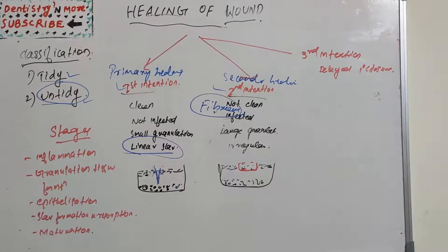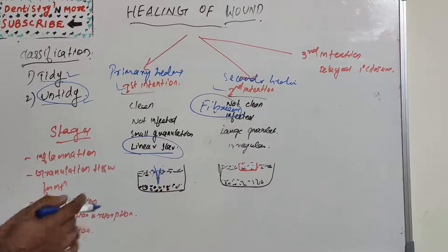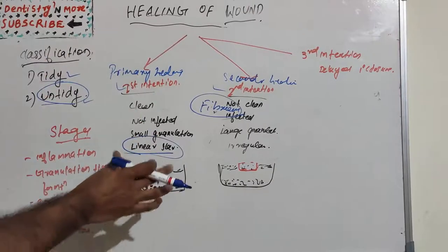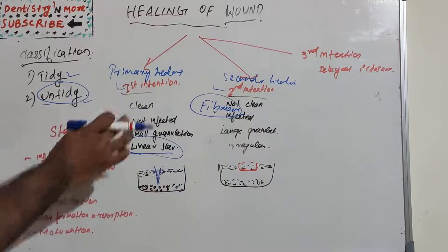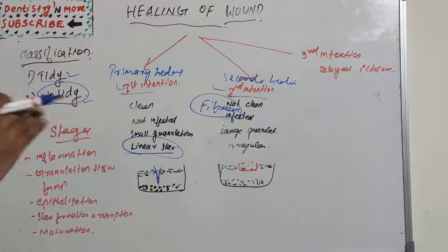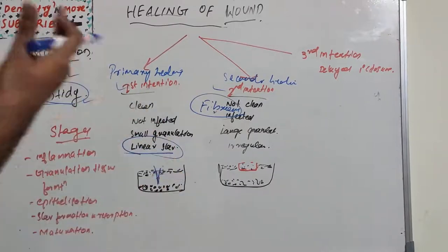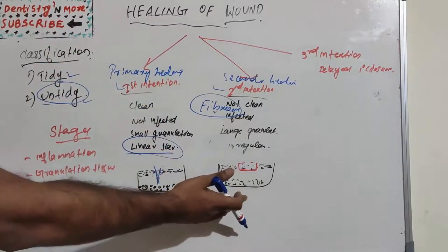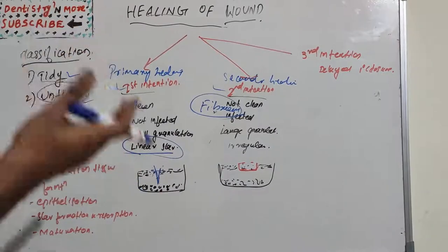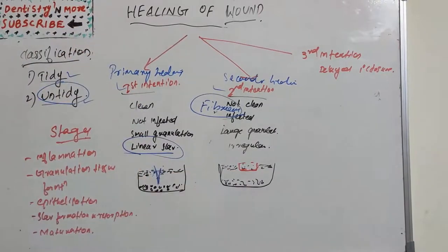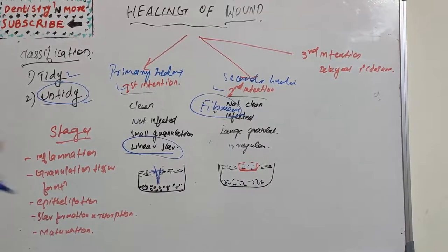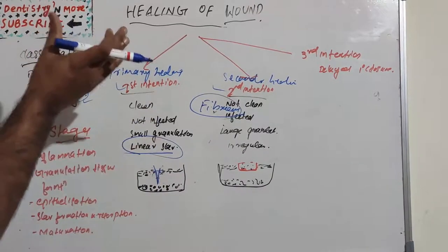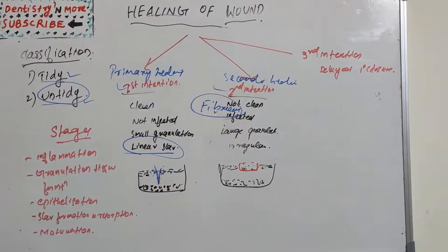In secondary intention there will be hypertrophic scar formation and contraction of the tissue. It will not resemble the original tissue the way it was before the injury. In primary intention, the healed tissue is almost like the original tissue, but in secondary intention there will be contraction of the wound area. That is the basic difference between primary and secondary healing.